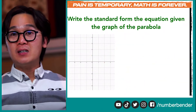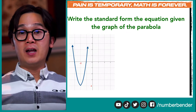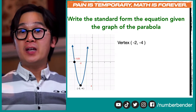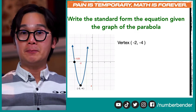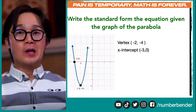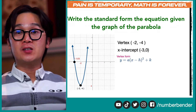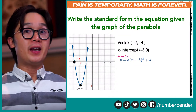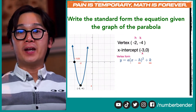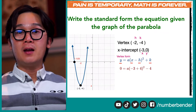Now let's work with the second equation. In this case, the parabola is still opening upward, and the vertex is given at negative 2 and negative 4. We're also given one of the x-intercepts at negative 3 and 0. To complete the work, we start by finding the missing constant in our vertex form: y equals a times quantity x minus h squared plus k. We replace h with negative 2, k with negative 4, x with negative 3, and y with 0.